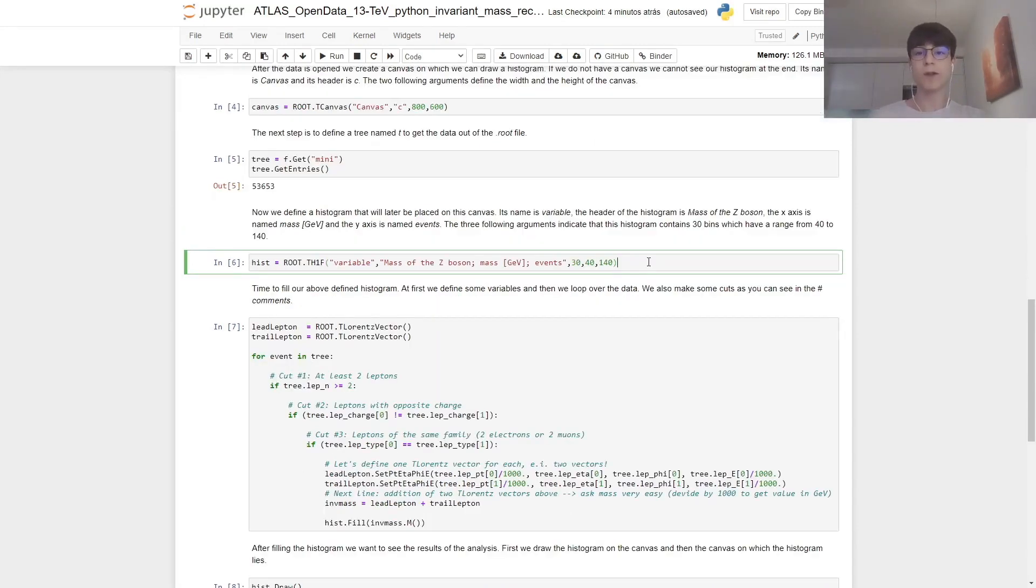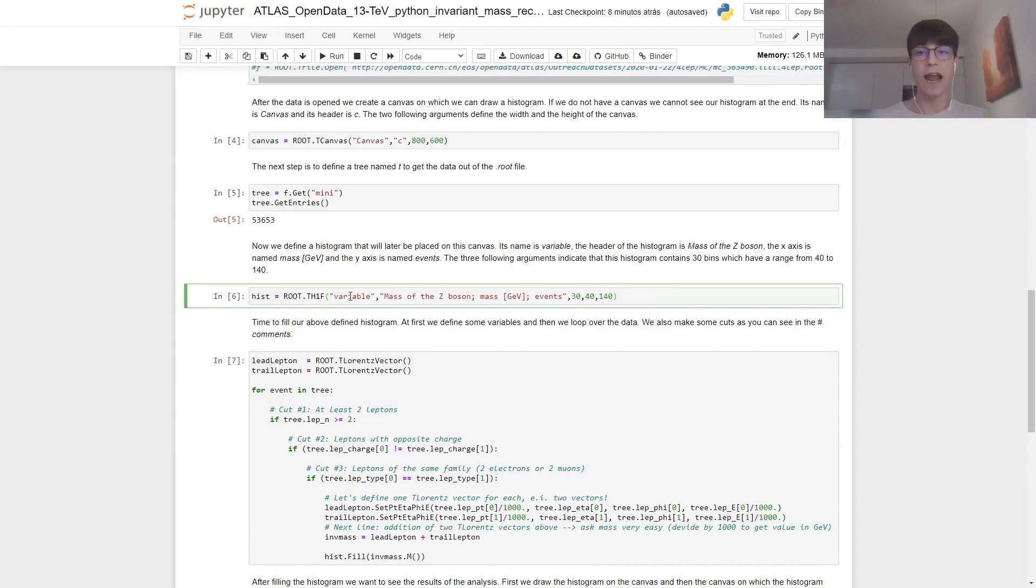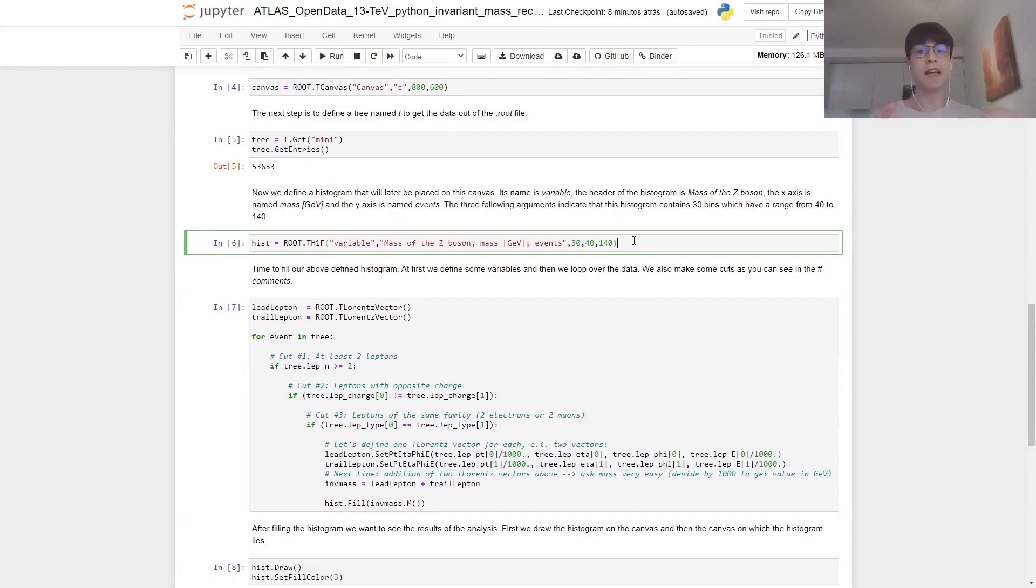Now, since we're using a histogram, we also need to declare it. So we get a variable hist, and then inside the ROOT library, we get TH1F, and then the name of our histogram. And we are going to look at the mass of our Z boson in giga-electron volts. So that is going to be our title. We're going to have a number of 30 bins, and we're going to go from 40 GeV up to 140 GeV, which means that our x-axis will have the mass, and our y-axis the amount of events with such properties.